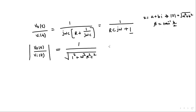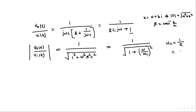We can further simplify the magnitude to 1 over the square root of 1 plus (ω over ωc) squared, where ωc equals 1 over τ — the time constant — and the time constant τ equals RC. So the value of ωc is 1 over RC, and it appears in the denominator. This is called the cutoff frequency: τ is the time constant and ωc is the cutoff frequency.